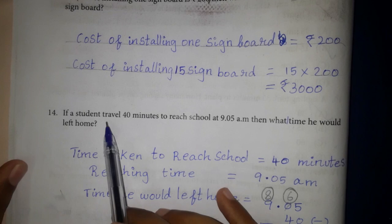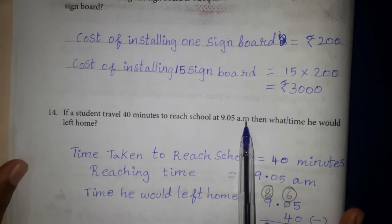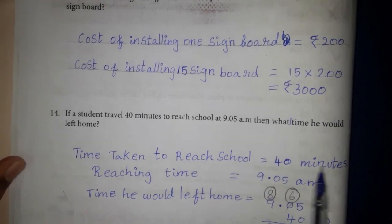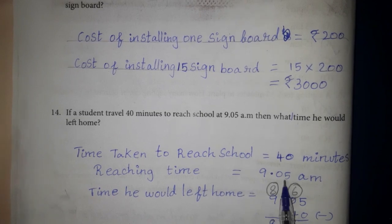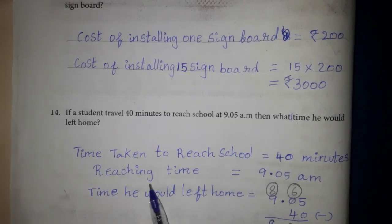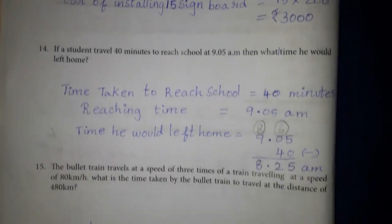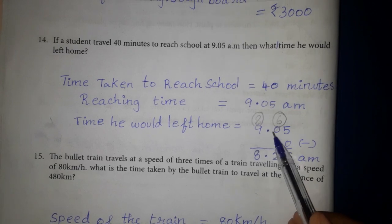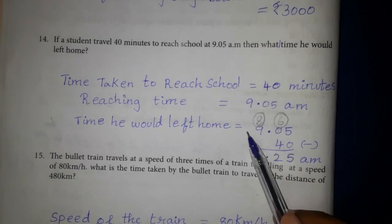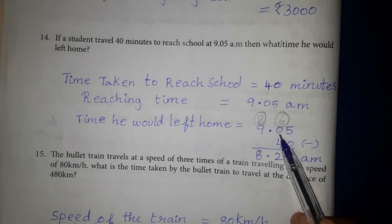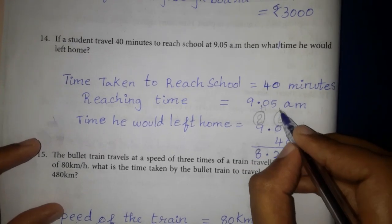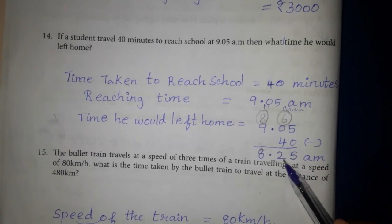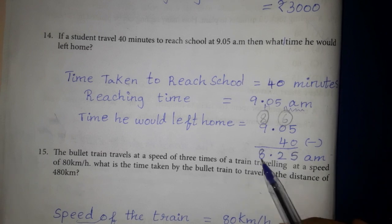14th one. If a student travels 40 minutes to reach school at 9:05 am, then what time did he leave home? Time taken to reach school is 40 minutes. Reaching time is 9:05 am. So departure time = 9:05 am minus 40 minutes = 8:25 am.